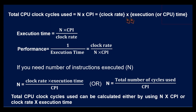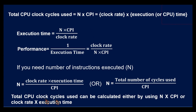Instead of giving different formulas, all the relationships are combined together so you can find any unknown value if the other values are given. For example, if you need the number of instructions N, then N = (clock rate × execution time) / CPI. It can also be given as total number of clock cycles divided by CPI. Total CPU clock cycles used can be evaluated by either N × CPI or clock rate × execution time.